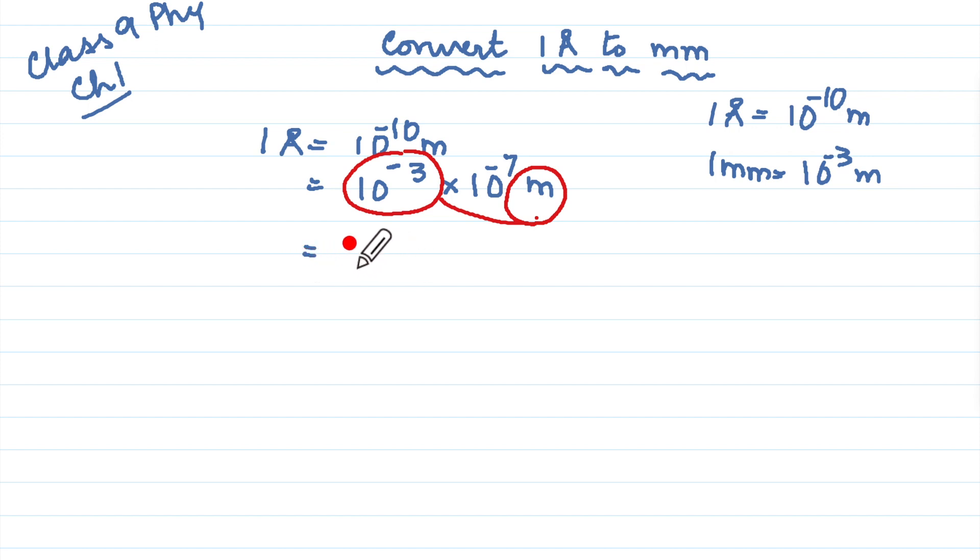So we will write this as 10 to the power minus 7 millimeter. And here you could say since 1 millimeter is equal to 10 to the power minus 3 meter, now if I want 1 millimeter equal to dash angstrom units, then I will say 1 angstrom unit is 10 to the power minus 7 millimeter. So 1 millimeter is going to be how much?